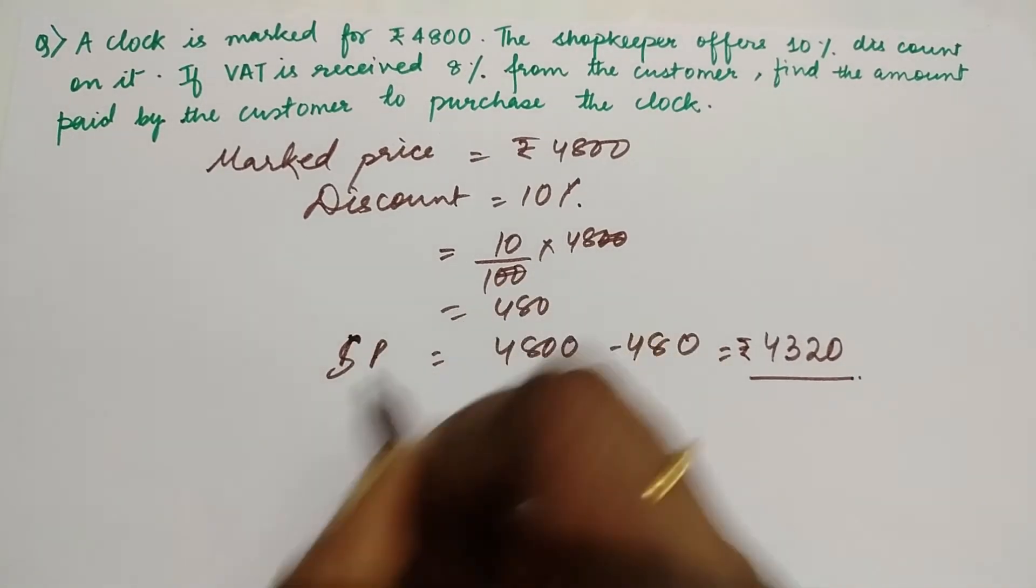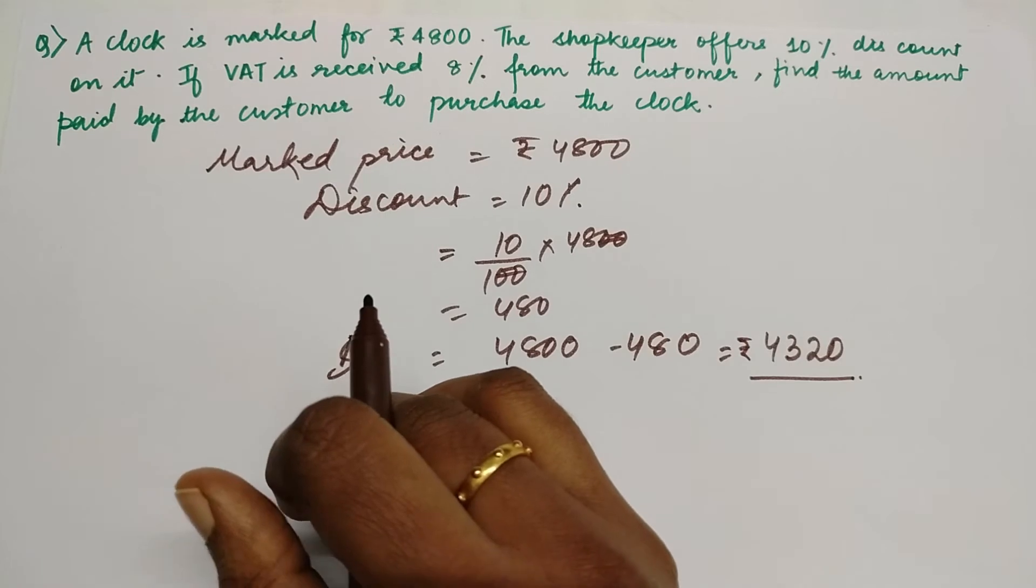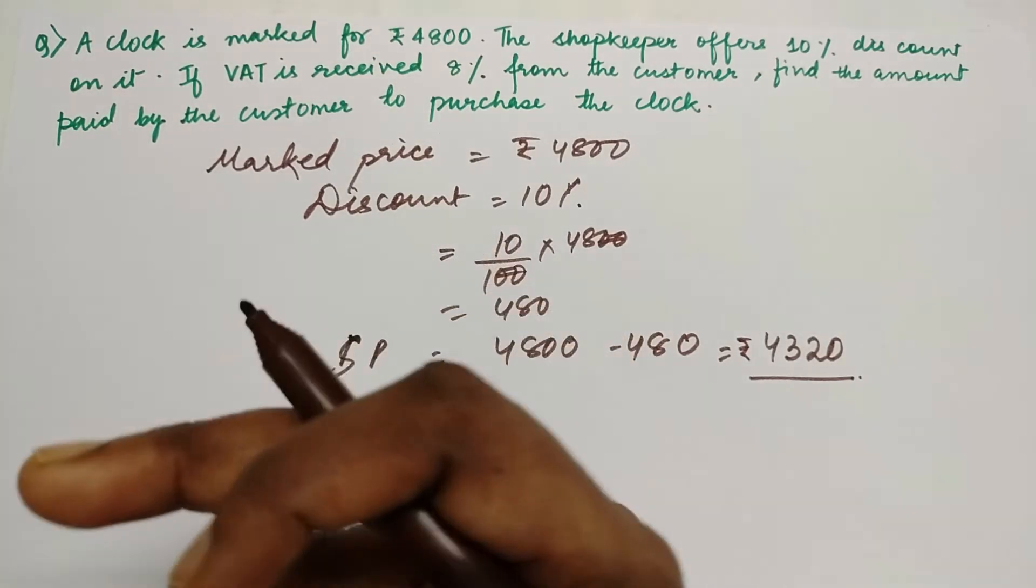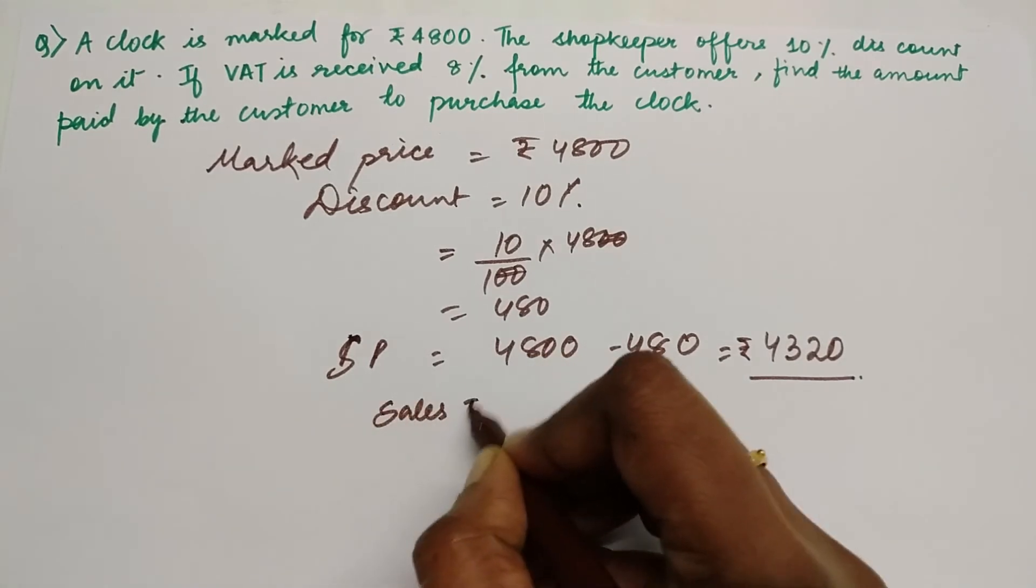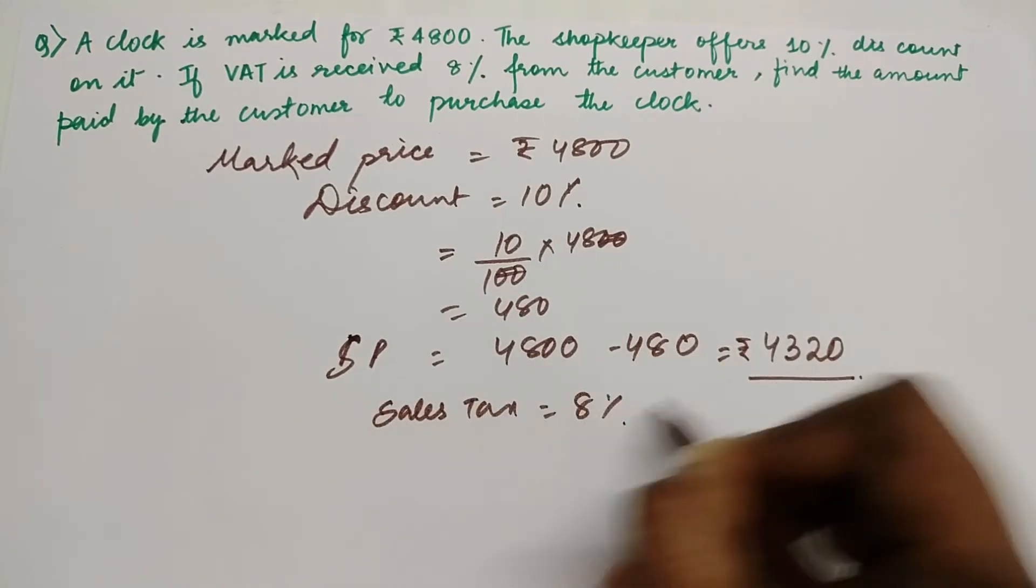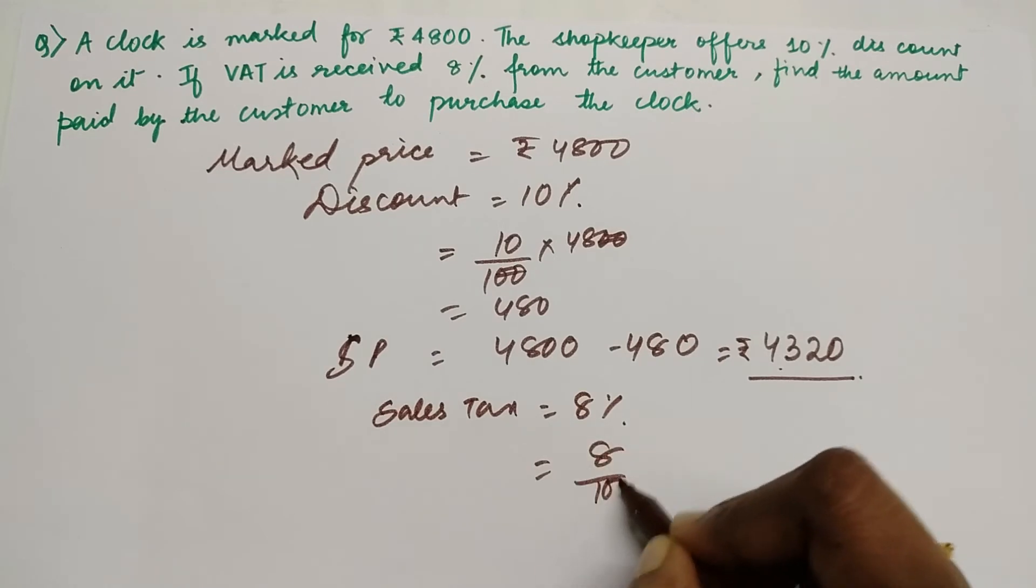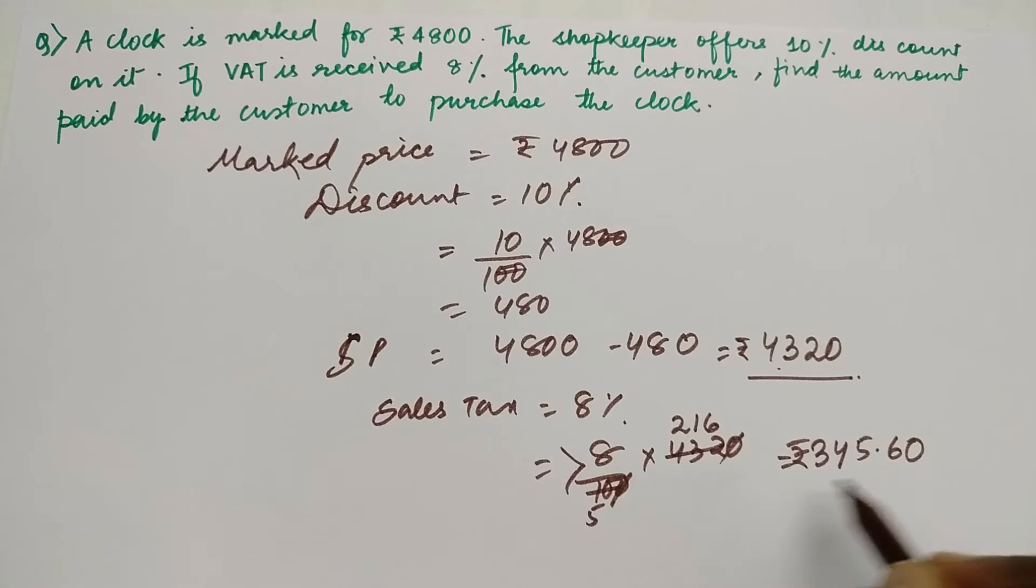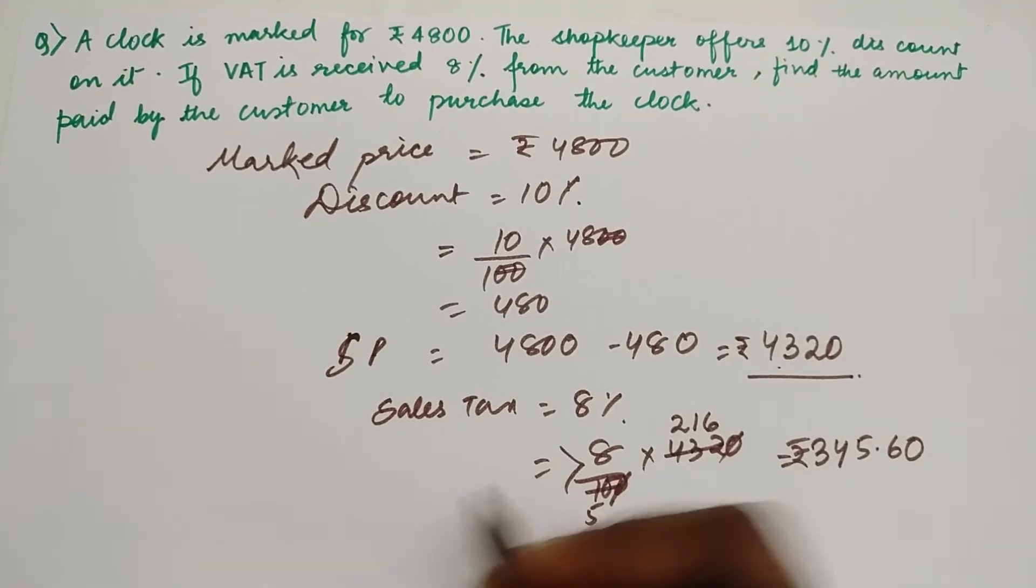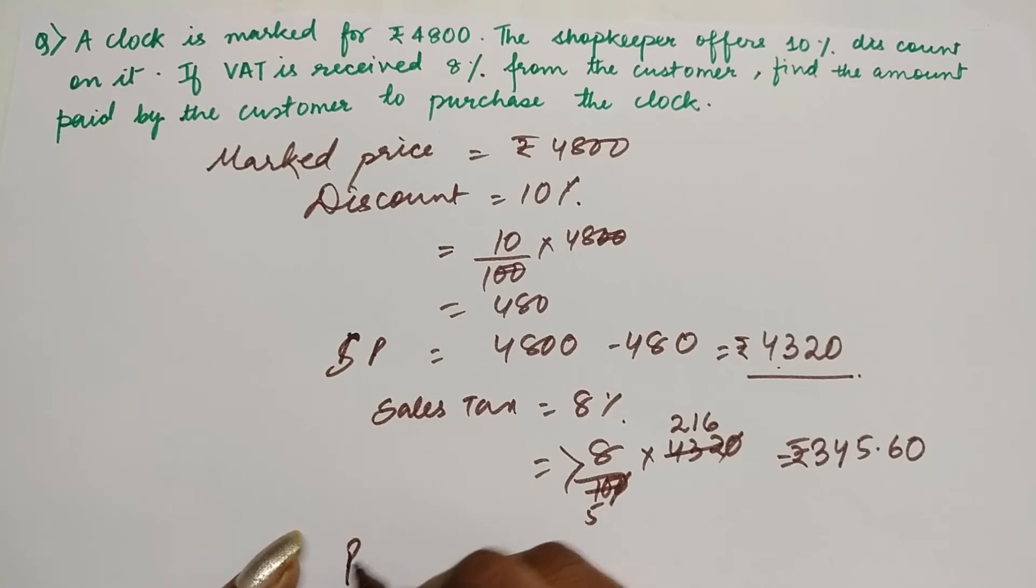Now here he has to pay a sales tax or VAT of 8%. So sales tax that he is paying is 8% on this amount, so 8% of ₹4,320. If this is the sales charge that he is going to pay, the sales tax, the purchase price is going to be ₹4,320 plus ₹345.60.